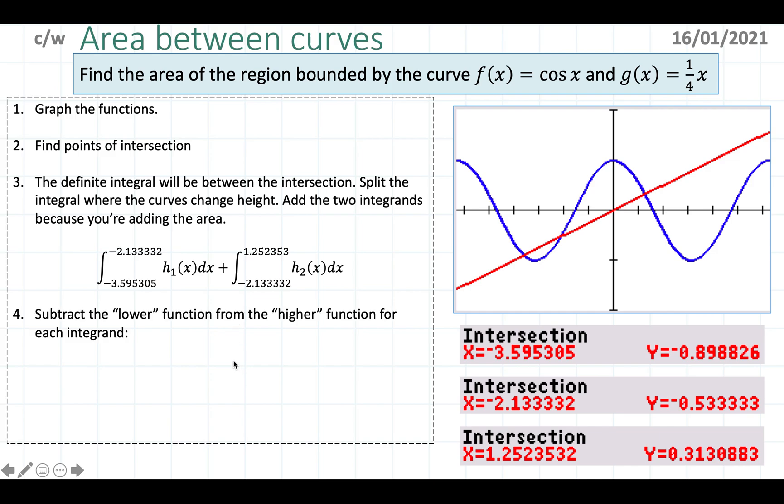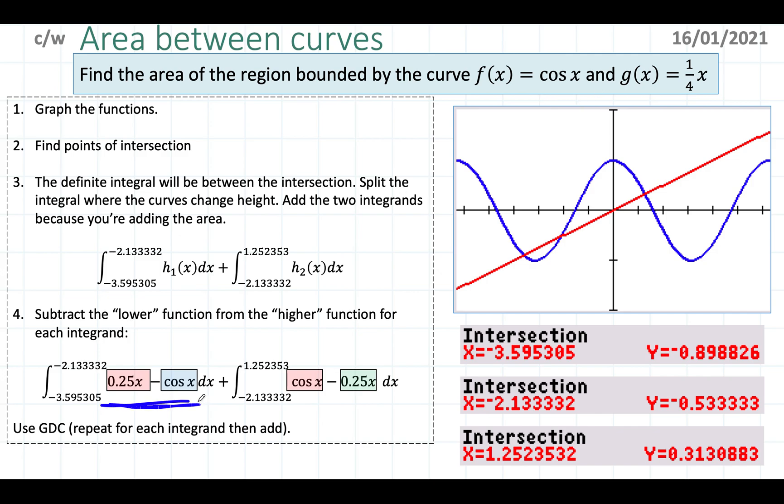We subtract the lower function from the higher function for each integrand. This is going to be, notice how the red one is at the top minus the cos, and then the cos minus the 0.25. Now you would use the GDC for this. What you want to do in the GDC is you don't graph the original. You graph this new expression and you find the integral from this limit to this limit. Then you repeat again and you're going to add up your answer.